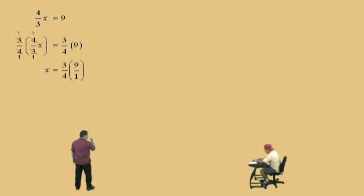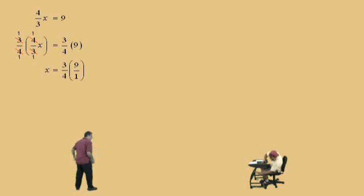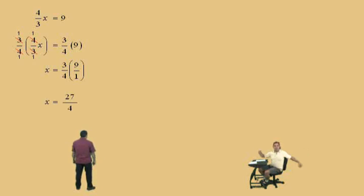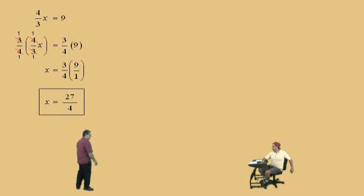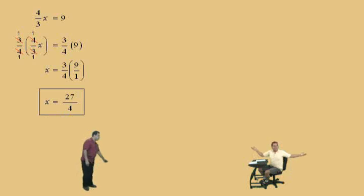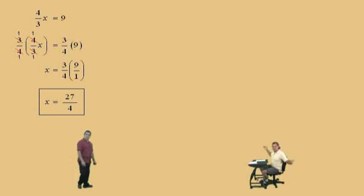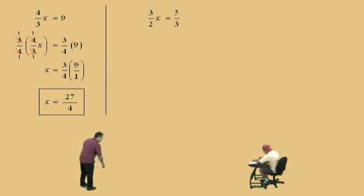We can't reduce anything. How do you multiply fractions, Charlie? Straight across the top and straight across the bottom. Very nice there, Charlie, so bring us home. 27 over 4. Very nice there, 27 over 4. Phew, that was a tough one. Let's do another one.